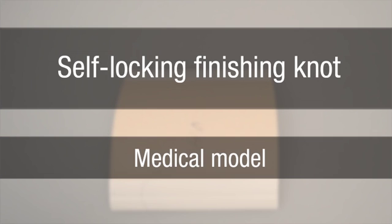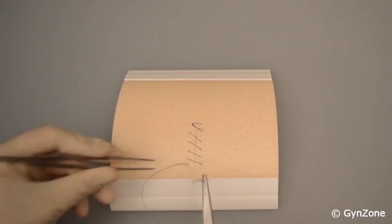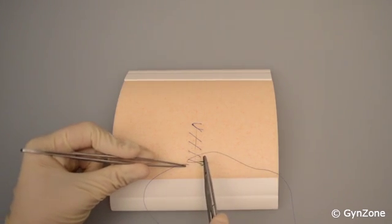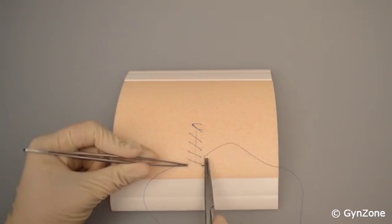This section demonstrates a self-locking finishing knot on a medical model using suture materials. Make one final straight stitch on your continuous suture at a relatively close distance to the previous stitch.